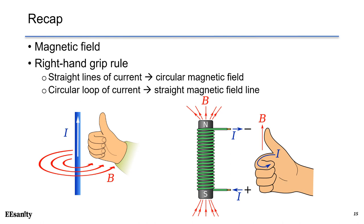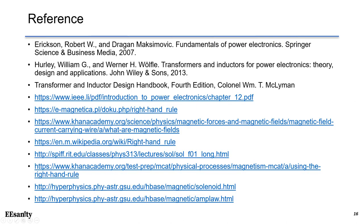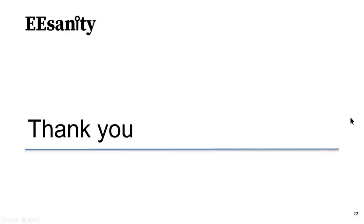Recap. In this lecture, we learned the basics of the magnetic field. We also studied two different cases using the right-hand grip rule to find the magnetic field generated by current. The first case is a straight line of current creating a circular magnetic field. In the second case, a circular loop of current creates straight magnetic field lines inside the solenoid. Thank you and see you next time.